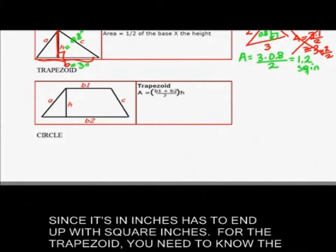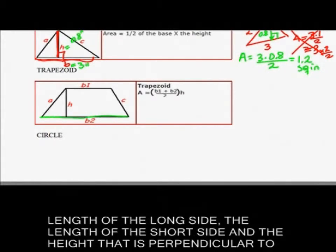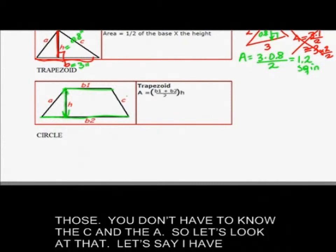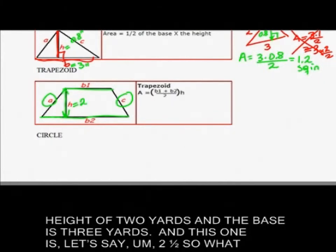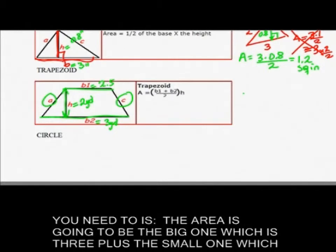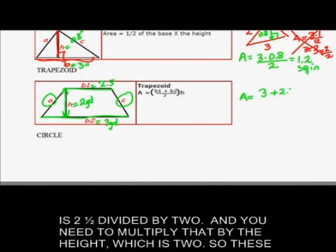For the trapezoid you need to know the length of the long side, the length of the short side, and the height that is perpendicular to those. You don't have to know the C and the A. Let's say I have a height of 2 yards and the base is 3 yards and this one is 2.5. So what you need to do is the area is going to be the big one which is 3 plus the small one which is 2.5 divided by 2 and you need to multiply that by the height, which is 2.